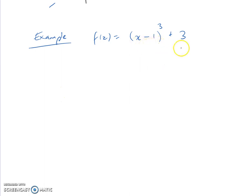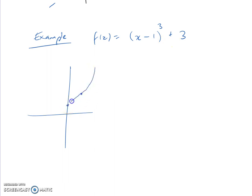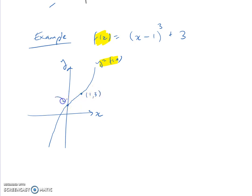So what does this graph look like? f of x equals x minus 1 cubed plus 3 looks like this. Normally my point of inflection is at (0, 0), but this point of inflection is at (1, 3). The y-intercept — when x is 0, I get negative 1 cubed, which is negative 1 plus 3, which is 2. So my cubic looks something like that. I'm not going to worry about the x-intercept for now — I just want to illustrate how to find inverse functions.